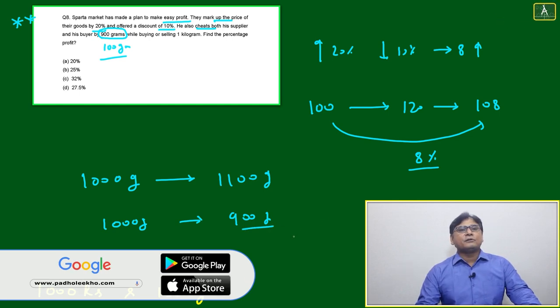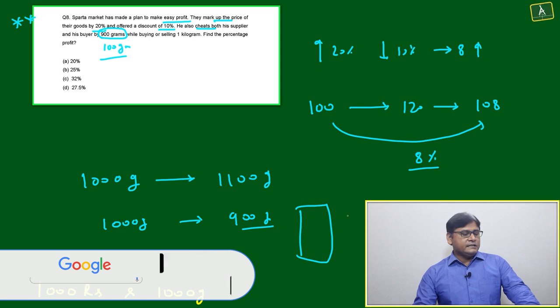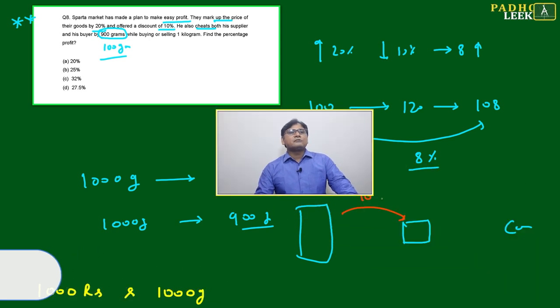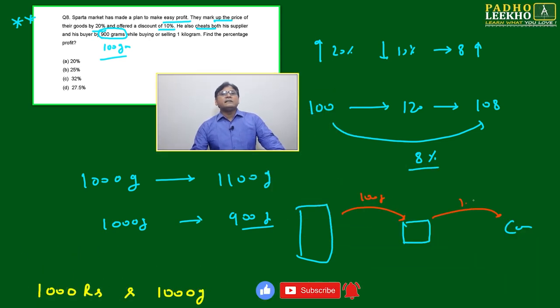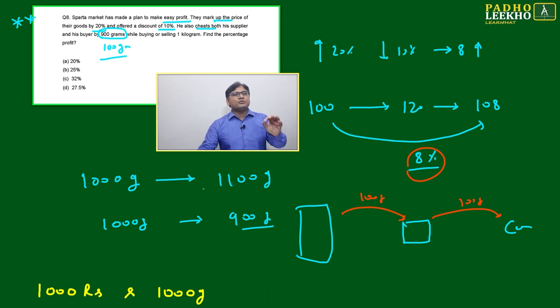You're getting the idea: this is the shopkeeper, this is the wholesaler, this is the customer. He's taking from here with 100 gram profit, selling here with 100 gram profit, and then there's the 8% total profit based on markup and discount.